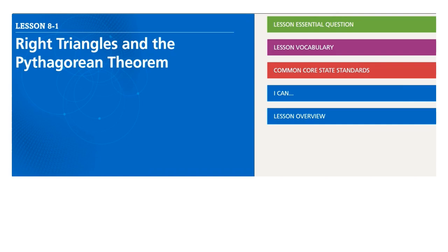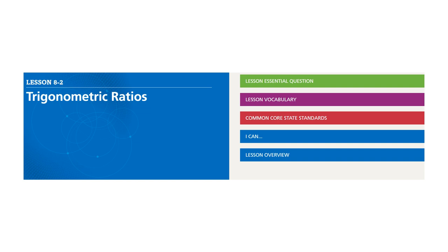Throughout this week, we will be covering two lessons. The first lesson is 8-1, right triangles and the Pythagorean theorem. The second lesson is about trigonometric ratio. It's a very important lesson, and the previous one is also a very important lesson.